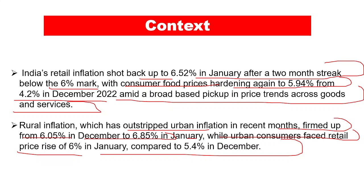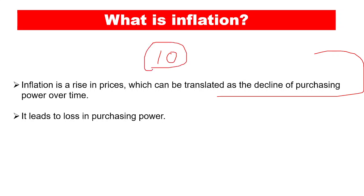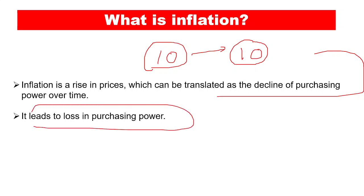Both rural and urban consumers are facing the brunt of retail inflation, but in the case of rural consumers, the inflation has been more significant. Inflation is basically a rise in prices, which may be translated as a decline of purchasing power over a period of time. For example, if you can buy a kilo of potatoes for 10 rupees at one point in time, and there is a 6 percent inflation, the prices will increase and those 10 rupees will have less purchasing power. Basically, inflation leads to a loss in purchasing power.